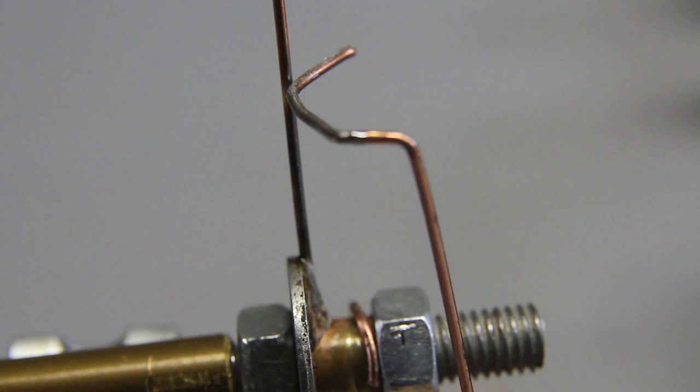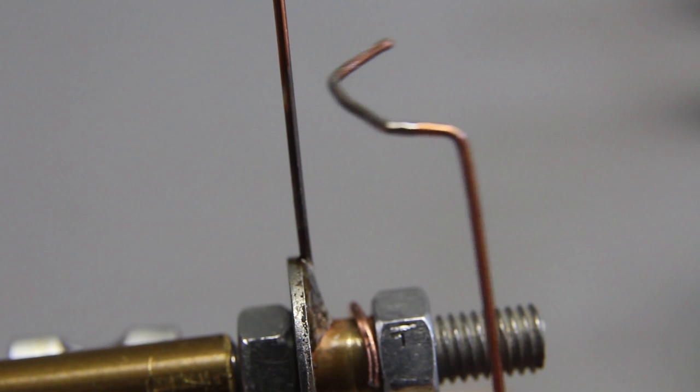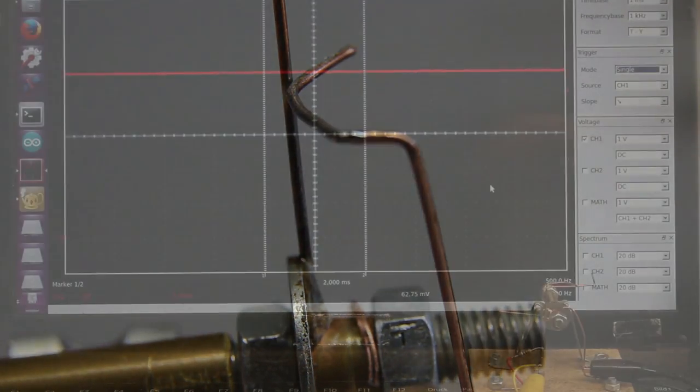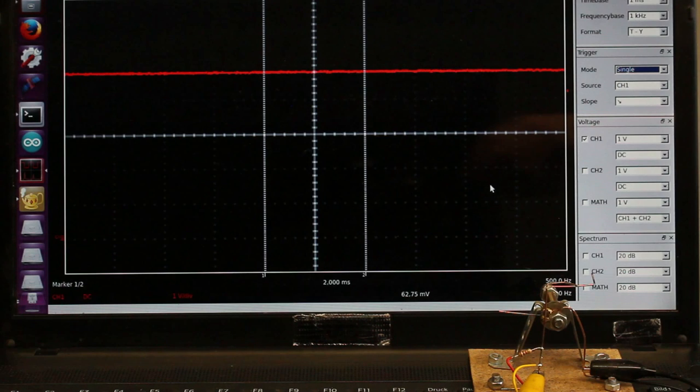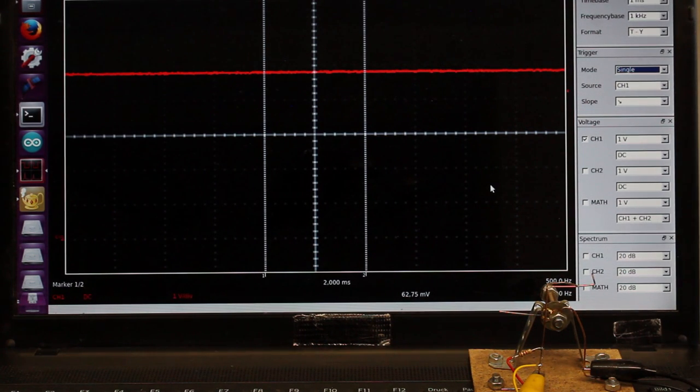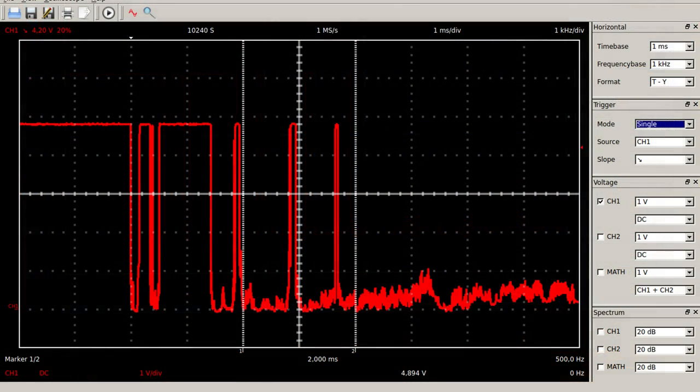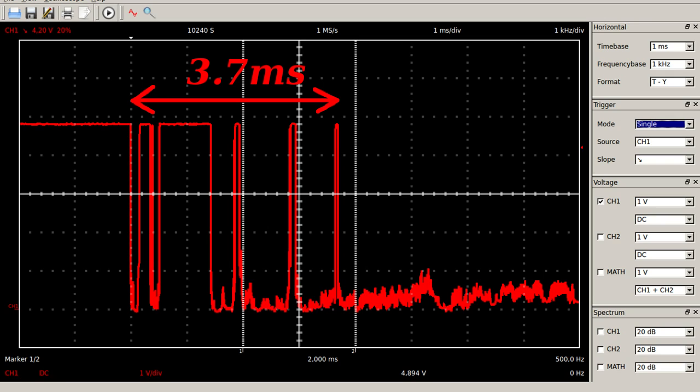The switch contacts are made of springy metals, thus when they strike together they bounce apart several times before making steady contact. That event is recorded with an oscilloscope plot using a time base of 1ms. When the switch gets closed there is a rapidly pulsed electric current for about 4ms instead of a clean transition from 5 to 0V.